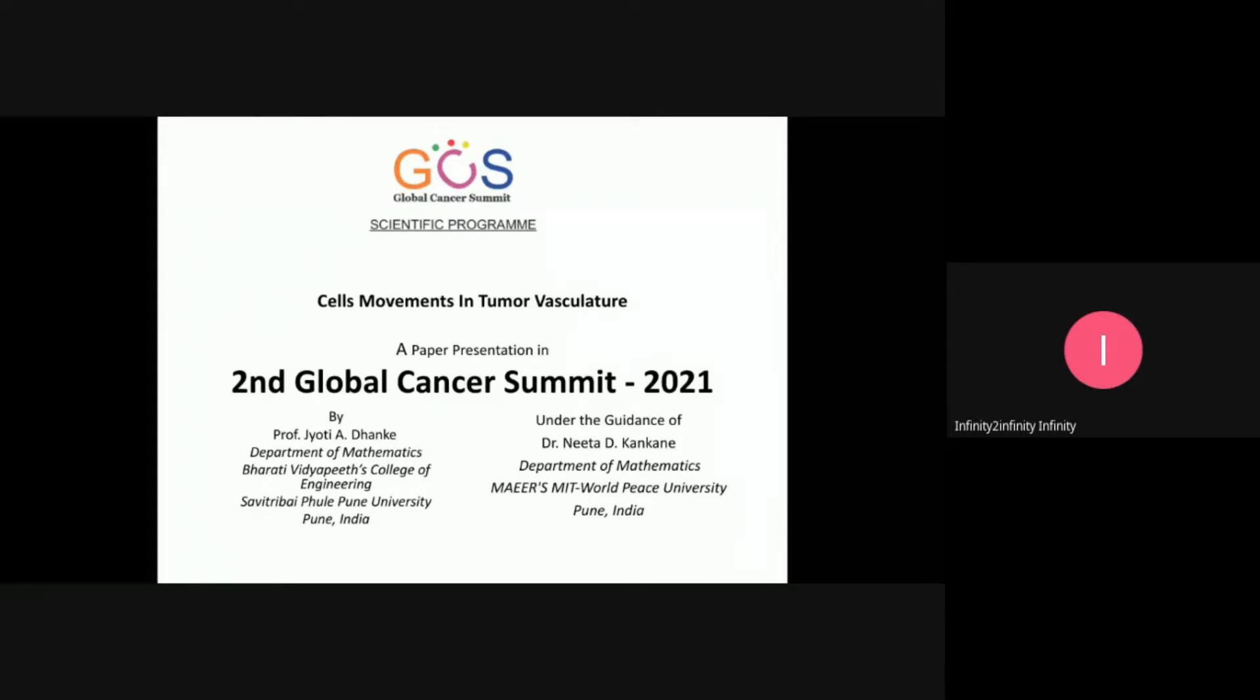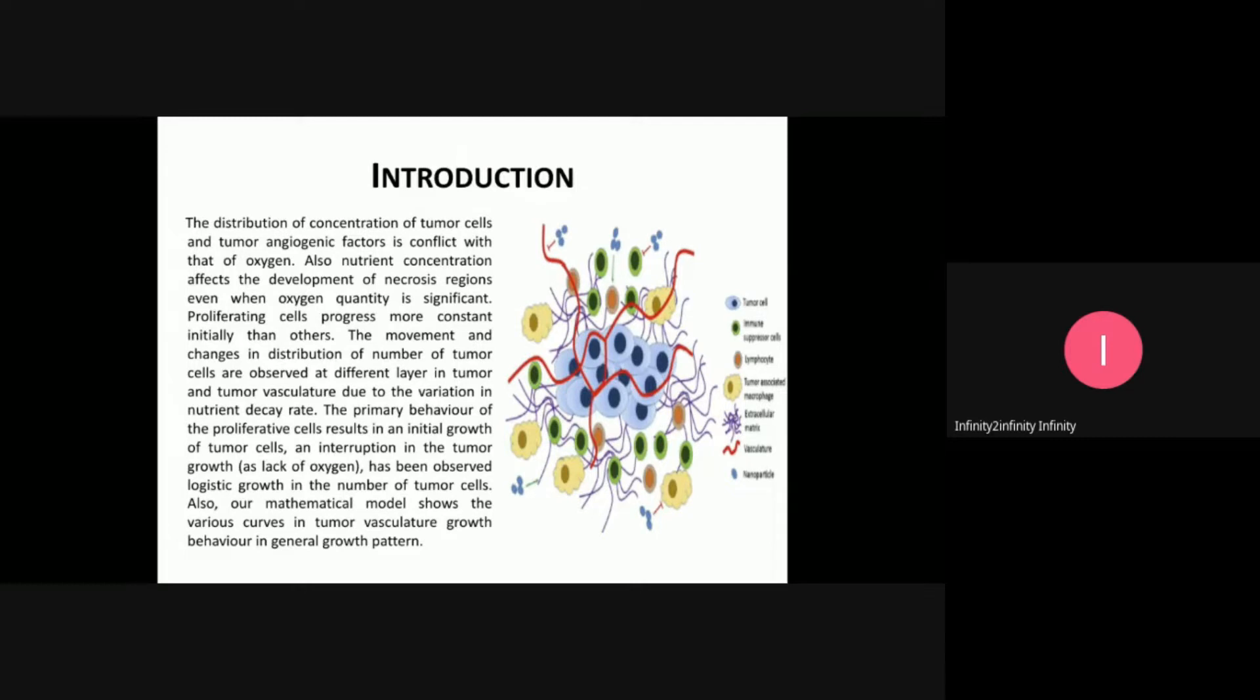The tumor vasculature contains various elements and compounds. Within this structure, we study how cells move between these different layers. This is the focus of our research on cell movements in tumor vasculature.